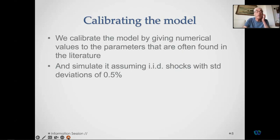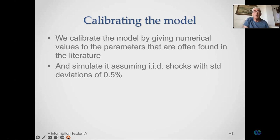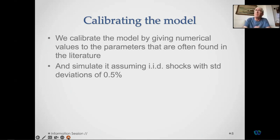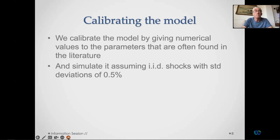We calibrate this model using parameter values from the literature and conduct robustness tests. We simulate it — because it is a highly nonlinear model — using i.i.d. shocks with no structure in aggregate demand, supply, and the Taylor rule. All shocks are i.i.d. normally distributed with standard deviation 0.5, which calibrates the model to represent quarterly periods.